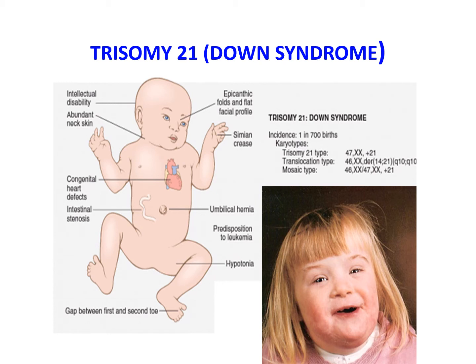The most frequent congenital heart defects are atrial ventricular septal defects, constituting 43%, followed by ventricular septal defects, atrial septal defects, and tetralogy of Fallot. Children with trisomy 21 have a high risk of developing leukemia. Virtually all patients with trisomy 21 older than age 40 develop neuropathologic changes characteristic of Alzheimer disease. Patients with Down syndrome also have abnormal immune responses that predispose them to serious infections, particularly of the lungs, and thyroid autoimmunity.